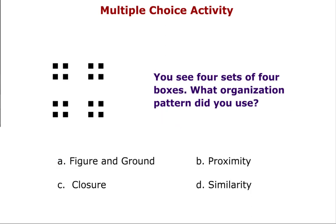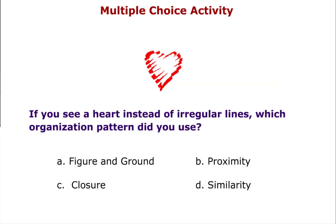You see four sets of four boxes. What organization pattern did you use? The answer is B, proximity. And finally, if you see a heart instead of irregular lines, which organization pattern did you use? The answer is C, closure.